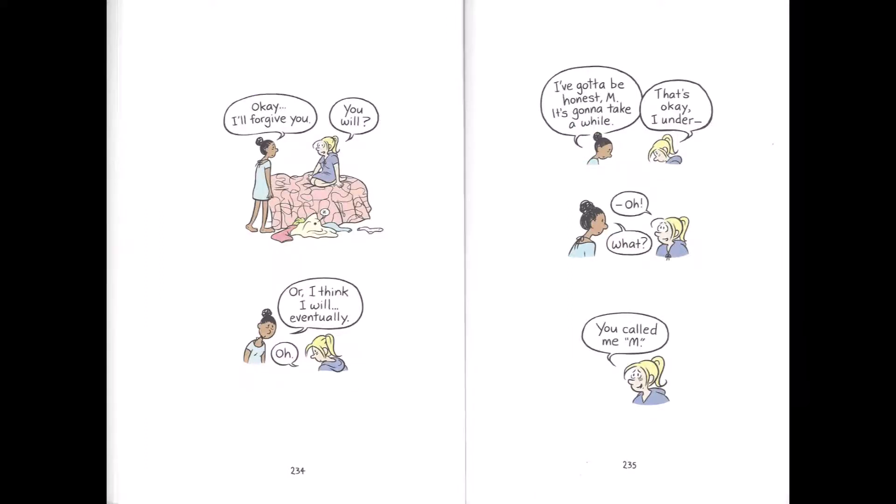We sit quietly for a couple of minutes until I think and she waits. Now both of us are drawing finger circles on my quilt. Finally, I stand up and take a deep breath. Okay, I'll forgive you.